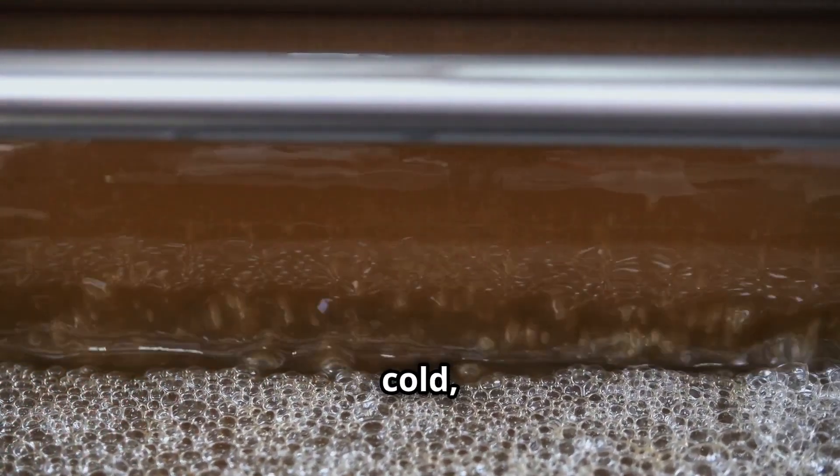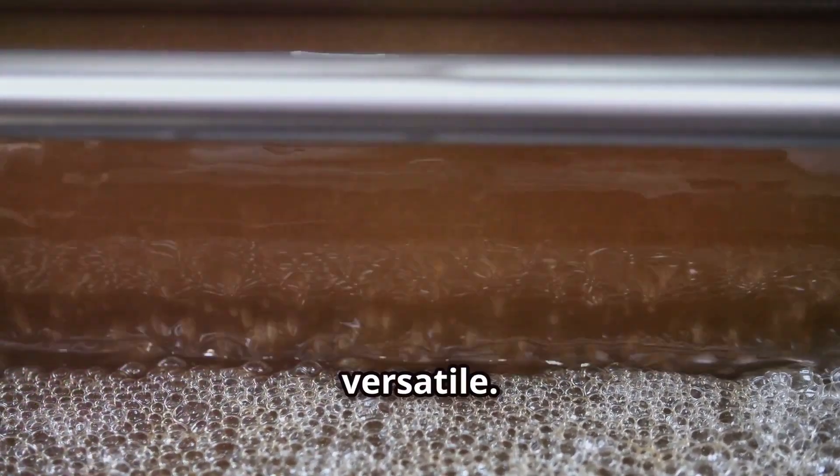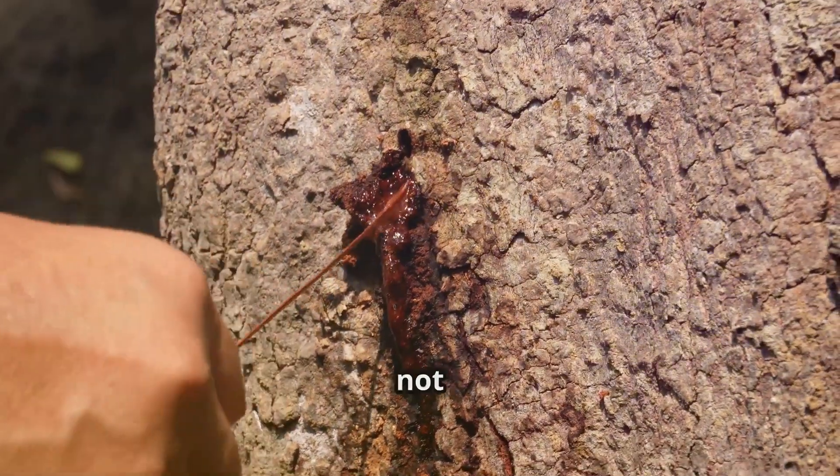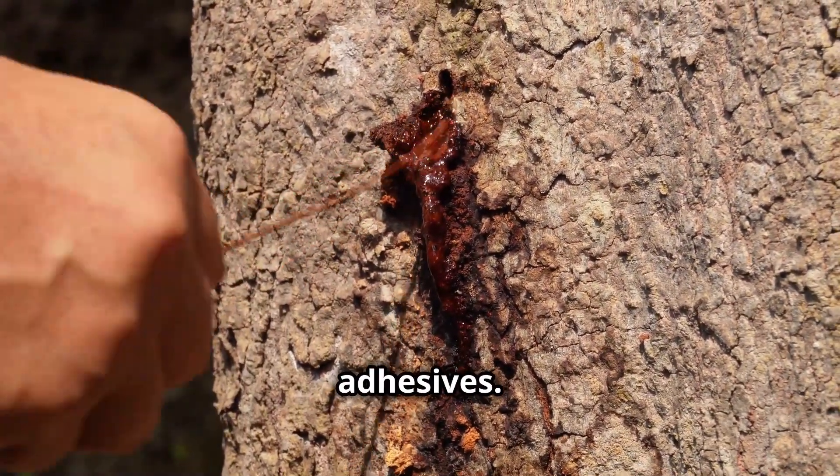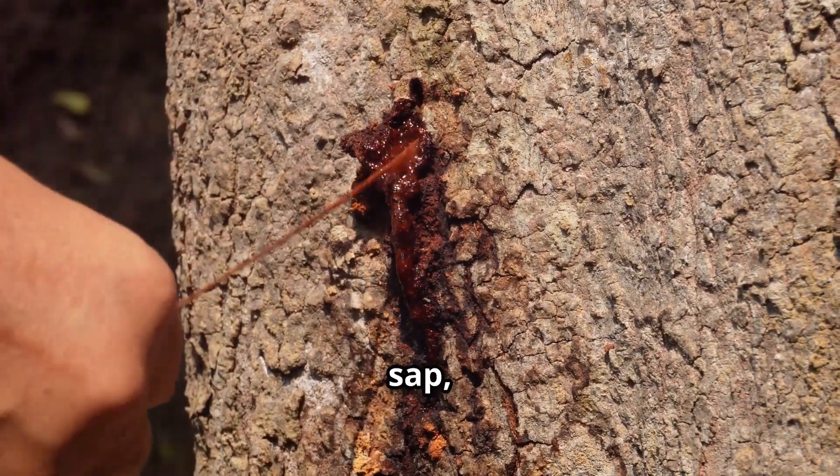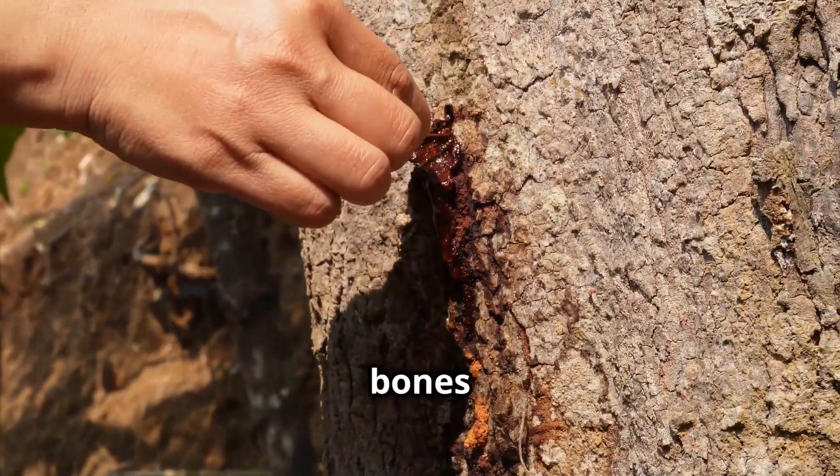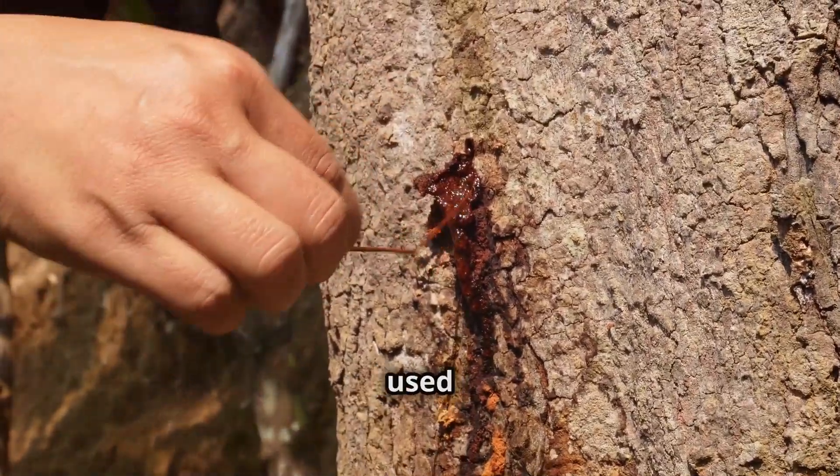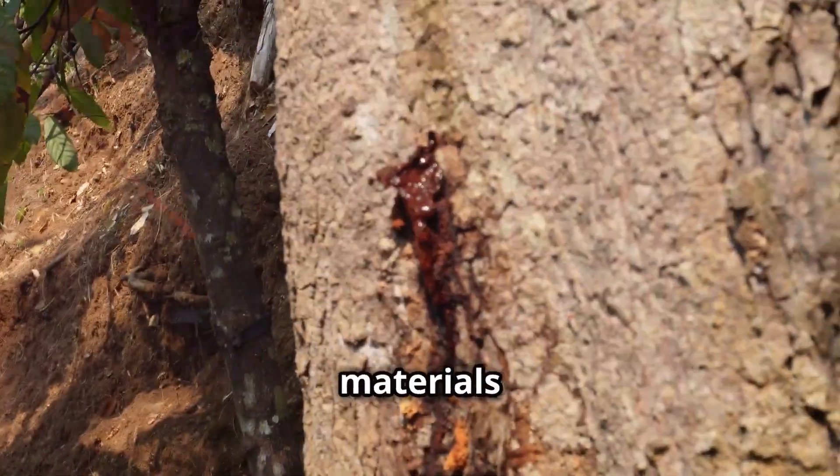Let's not forget about natural adhesives. Before synthetic glues, humans used materials like tree sap, animal hide, and even fish bones to create adhesives. These natural substances have been used for thousands of years to bind materials together.